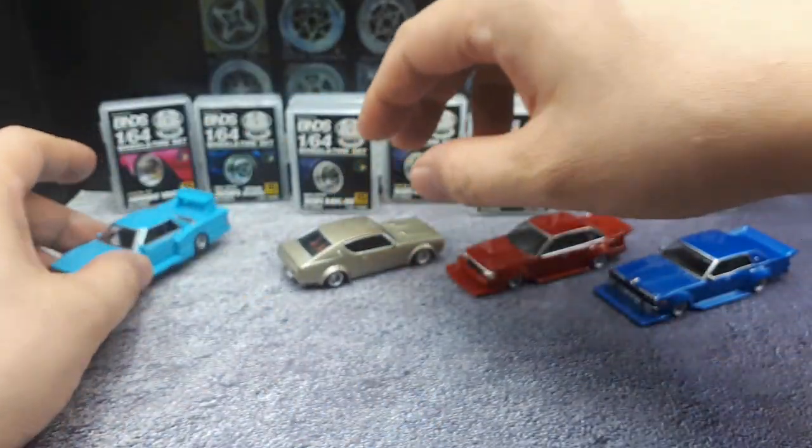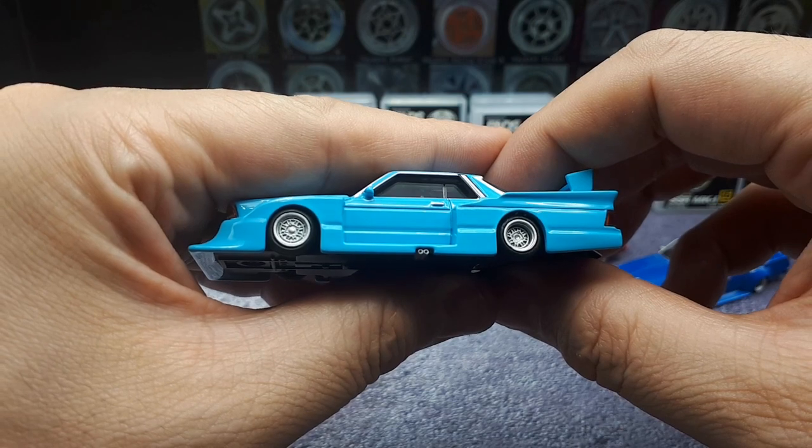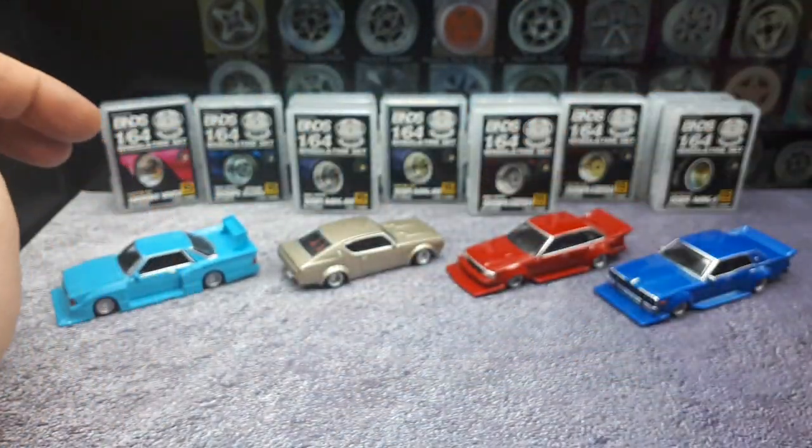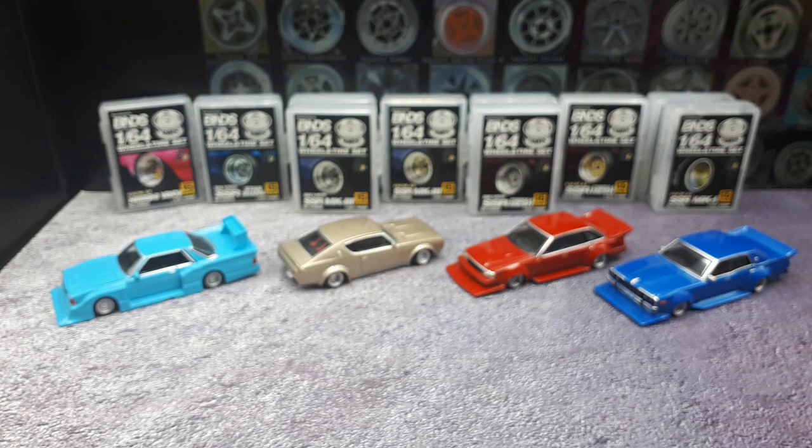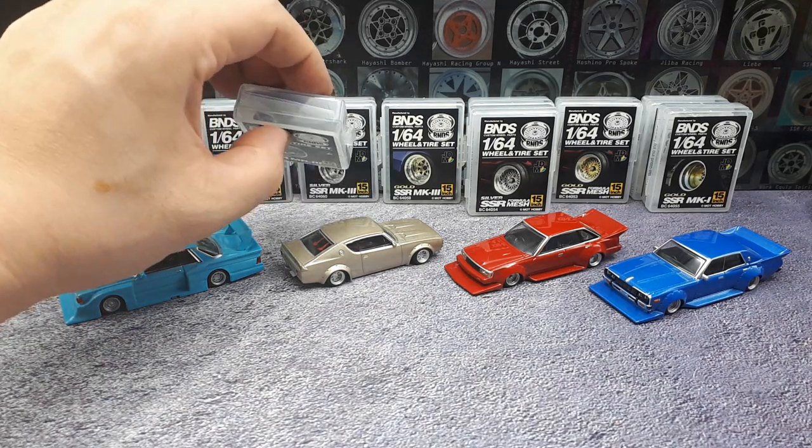This one I can understand though, it's pretty tight as far as the pattern goes. Anyways, this brand of wheels is called BNDS. I have seven different styles here that we're going to swap over. And these are alloy wheels. Let's take a look at this one here.